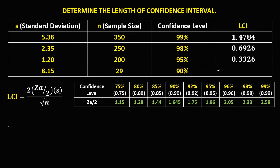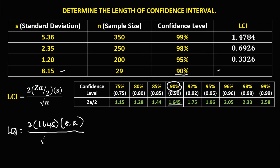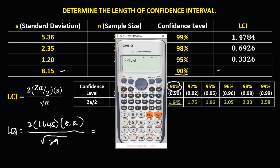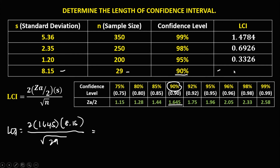For the last one: LCI equals 2 times the confidence coefficient. Since the confidence level is 90%, the confidence coefficient is 1.645. Times the standard deviation, that's 8.15, over the square root of the sample size — square root of 29. Solving: 2 times 1.645 times 8.15, then divide by the square root of 29. The length of the confidence interval is 4.9791.